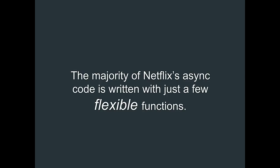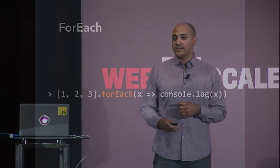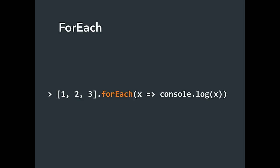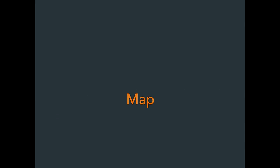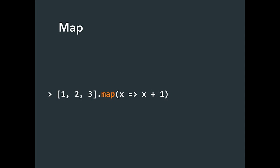The majority of Netflix's async code is written with just a few flexible functions that at first seem to have absolutely nothing to do with asynchronous programming. The first is forEach — you pass it a callback, it sends you the data inside the array until it's done. Map — take a function, apply it to every item in a collection, and put the results into a new collection. We're creating a new collection, not translating an existing one.